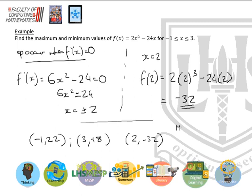So the maximum value, and this is where you make your statements, maximum value is 22 when x equals negative 1.